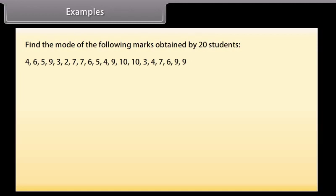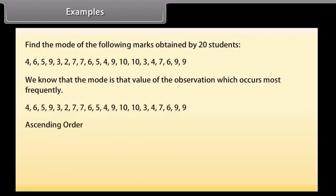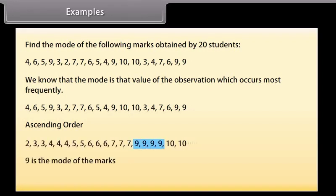Example. Find the mode of the following marks out of 10 obtained by 20 students. We know that the mode is that value of the observation which occurs most frequently. Let's arrange these marks in ascending order. We can see that 9 is occurring more frequently. So we can say that 9 is the mode of the marks.